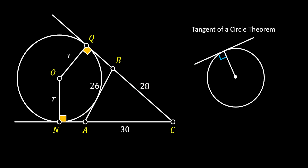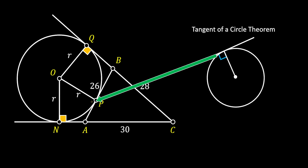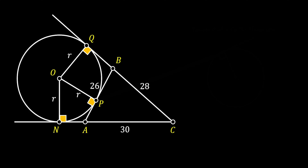Finally, we will pull another radius from point O to the tangency point between our circle and the line AB, and we will label it as P. If we again use the tangent of a circle theorem, this angle at point P must be a right angle as well.